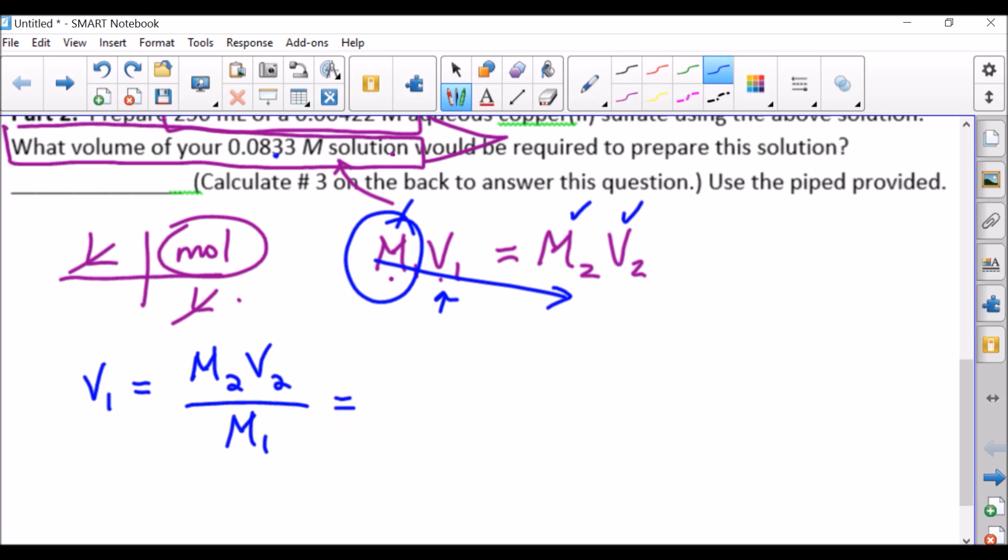So our volume that we're looking for of the original solution is equal to the molarity at the end times the volume at the end divided by the initial molarity. So when I plug those numbers in, and again, don't get too worked up that we're looking at milliliters because the units are the same. I've got our final molarity, which is 0.00422 molarity, and we're going to want 250 milliliters of that, and my initial concentration is 0.0833.